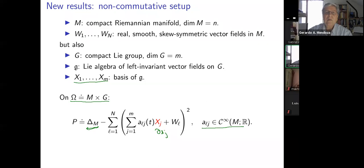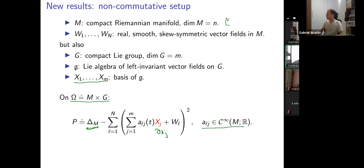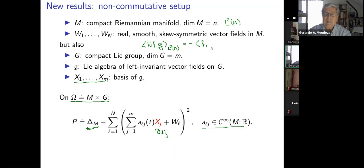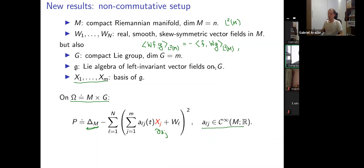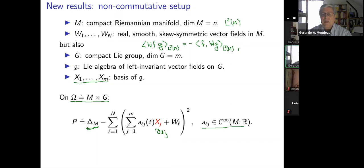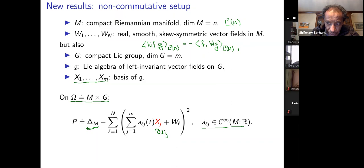Audience question: what is a skew-symmetric vector field? Answer: skew-symmetric with respect to the L2 norm on M — it preserves the volume form, so it is a kind of Killing vector field. Concretely, for smooth real functions f and g, the L2 inner product satisfies ⟨Wf, g⟩ = −⟨f, Wg⟩, which means the Lie derivative of the metric with respect to the vector field equals zero and the vector field preserves the volume form.